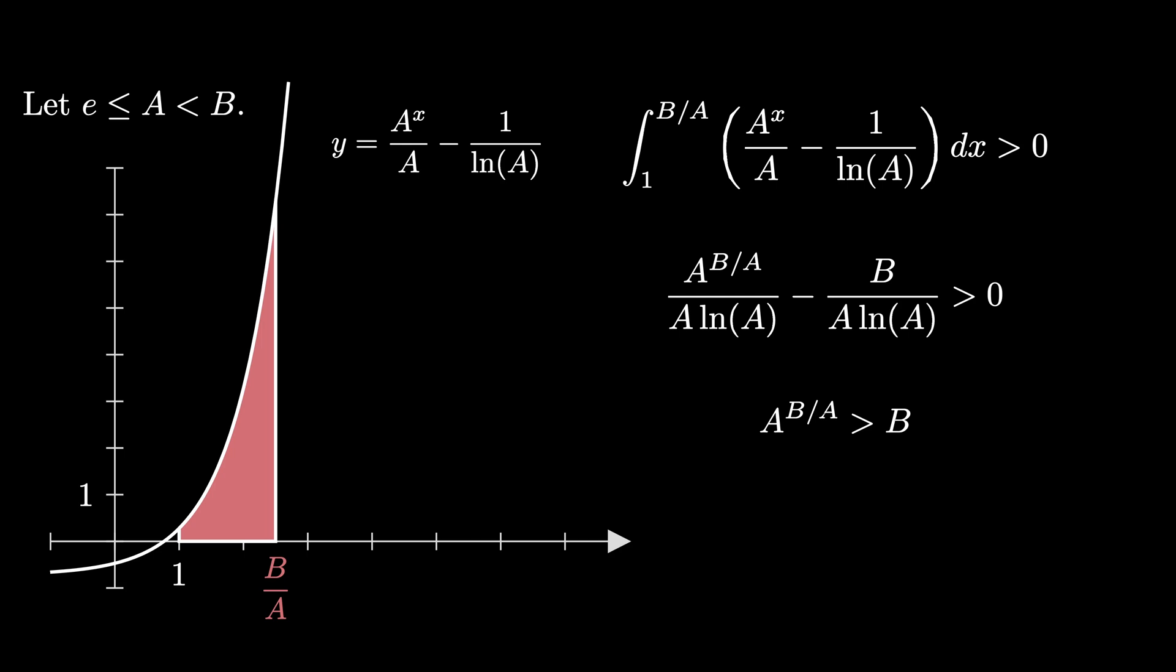Raising both sides to the power of a, we obtain the fact that a to the b is greater than b to the a. So in this situation when e is less than or equal to a is less than b, we again conclude that a to the b is greater than b to the a.